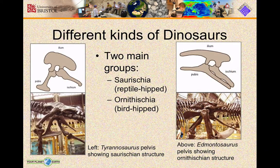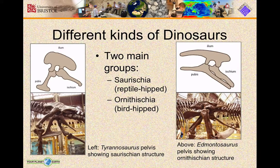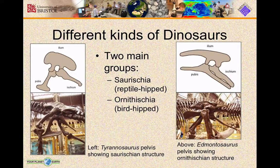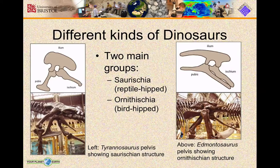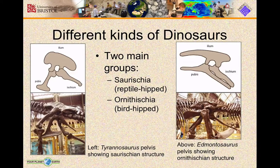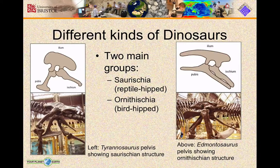We classify dinosaurs into two main groups: the saurischians and the ornithischians. This is on the basis of the arrangement of bones in their pelvis. You have these three bones — the ilium, the pubis, and the ischium. The ilium is sort of the hip bone, the pubis is the pubic bone, and the ischium I suppose would be the bum bone if we need a name for it.